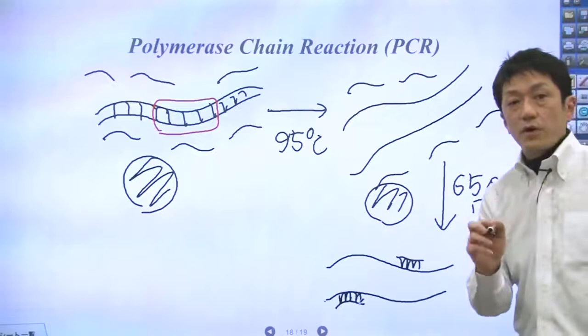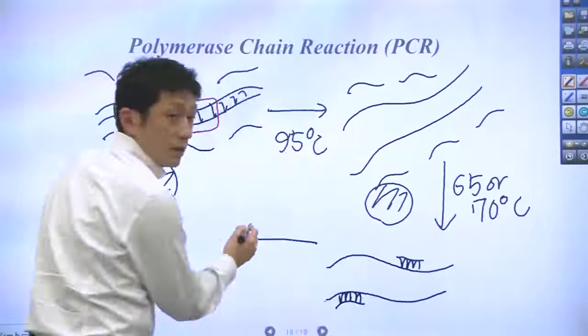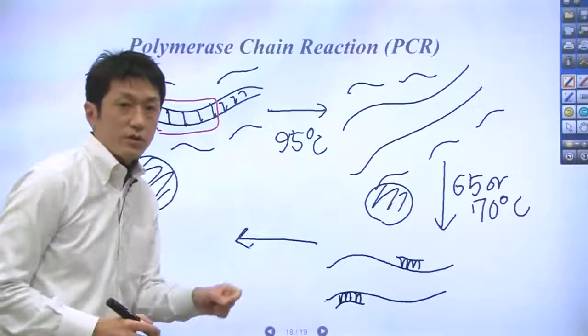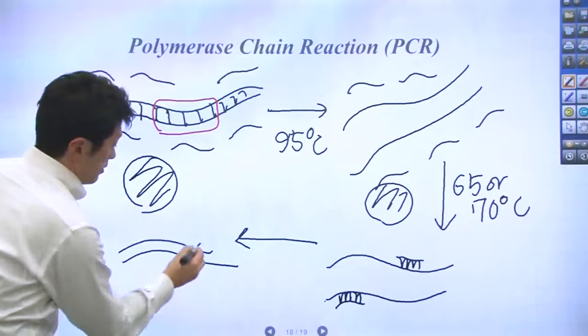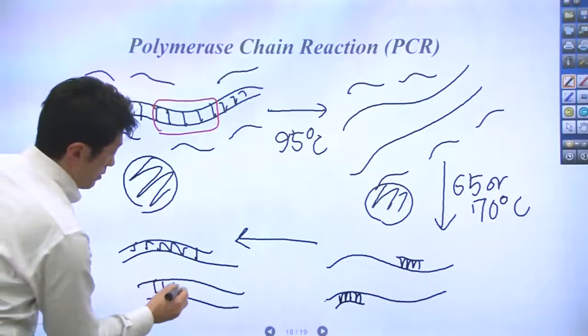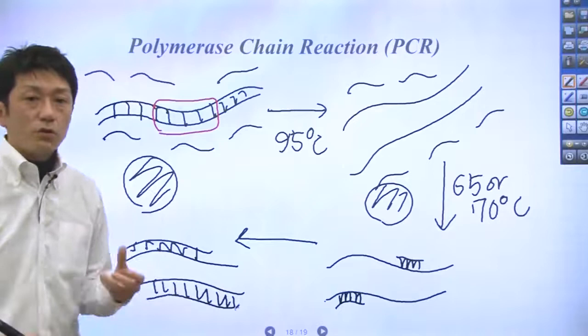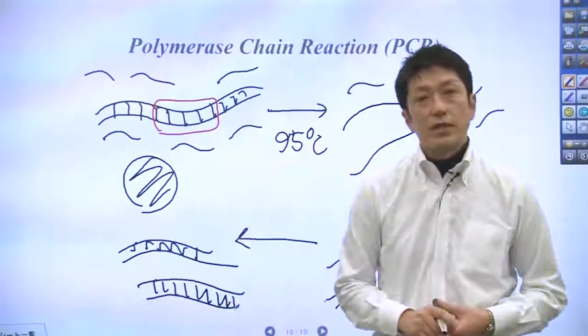The DNA polymerase replicates this partial double-bonded DNA by elongating the DNA primers until the complete double-stranded DNA sequence is formed. Like that. In the case of DNA polymerase of hot spring bacteria, an elongation reaction is facilitated at about 70 degrees.